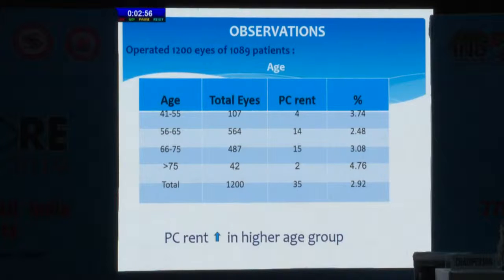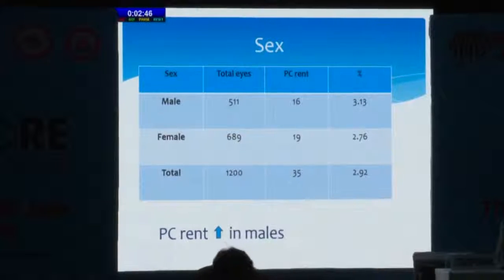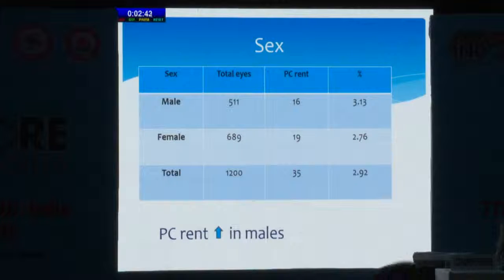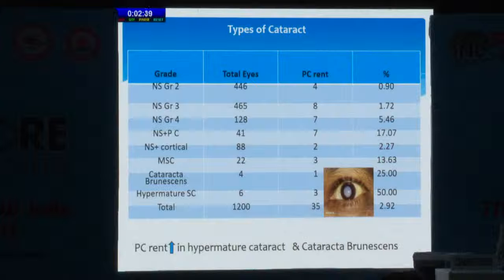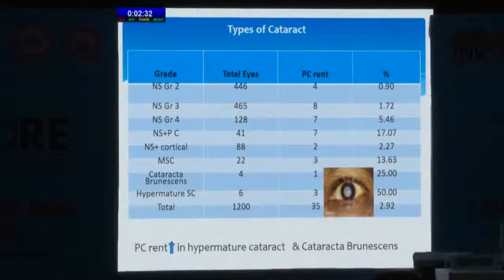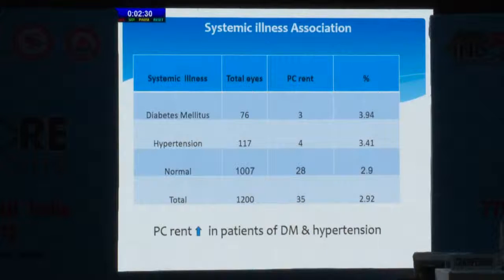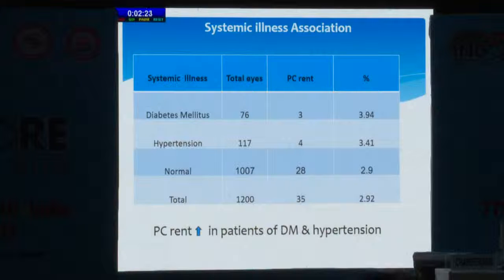We operated 1,200 eyes of 1,089 patients. As far as age is concerned, PC rent is more in higher age groups. Among sex, PC rent is comparatively more in males as compared to females. In type of cataract, PC rent was more in hypermature cataract and cataracta brunescens. As far as systemic illness is concerned, PC rent is more in cases of diabetes mellitus and hypertension as compared to normal individuals.